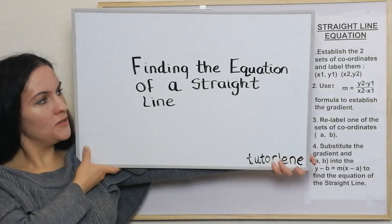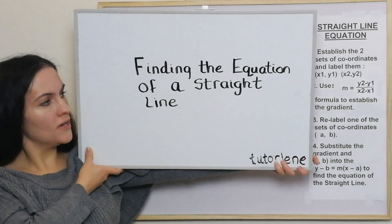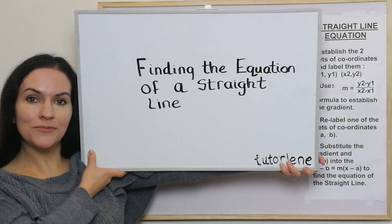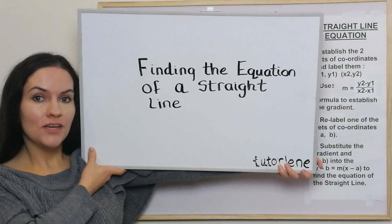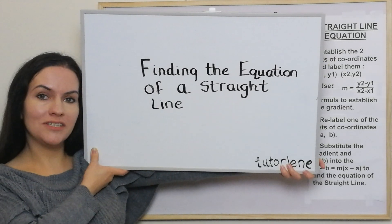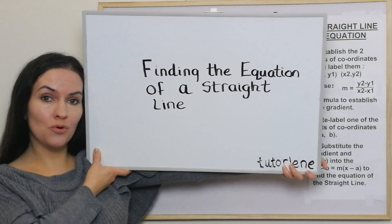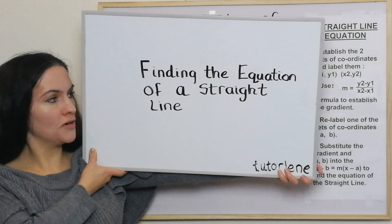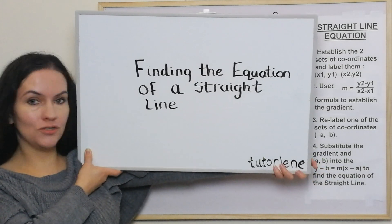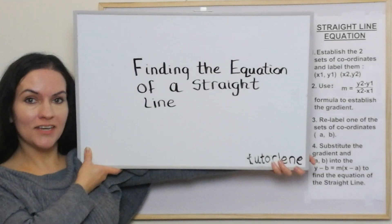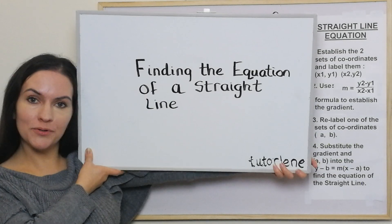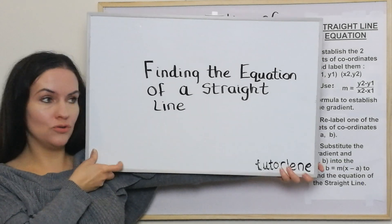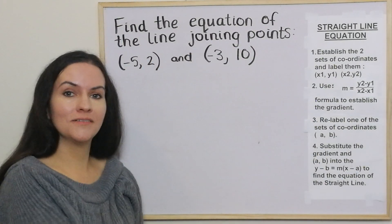Welcome. In this video we're going to look at finding the equation of a straight line, which is part of the National 5 curriculum. Normally you're given two sets of coordinates and you've got to work out what the equation of the straight line is. I'm going to use some examples to show you how to do that using a four step guide.